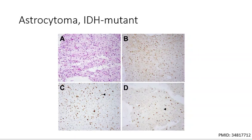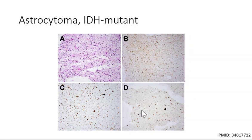Astrocytoma IDH mutant is shown here on H&E, revealing a moderately cellular neoplasm composed of infiltrating fibrillary neoplastic glial cells arranged in a vaguely microcytic background. The tumor cells express the mutant IDH R132H — this is the canonical mutation — along with P53, shown by these arrowheads, but they have lost nuclear expression of ATRX, shown in panel D. Other cells within the tumor microenvironment retain ATRX, but the tumor cells themselves have lost it.